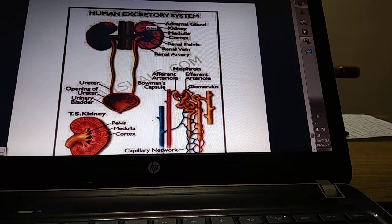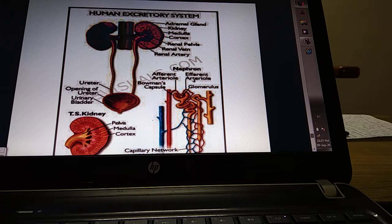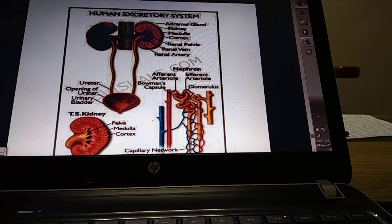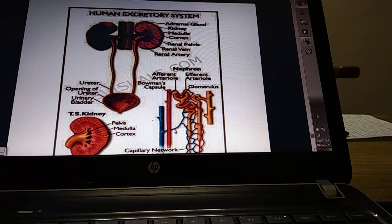The afferent arteriole enters into the cavity of the glomerulus and then branches here. A network of capillaries is known as the glomeruli and it leaves out as the efferent arteriole, which is narrower than the afferent arteriole. Then this efferent arteriole forms a network around the tubule known as vasa recta, and ultimately they unite to form the renal vein.